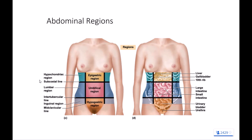Moving directly above the umbilical region, the region above that is called epigastric. Epi is a root word that means above — gastric is a technical term for stomach — so epigastric is the top of the stomach region, located above the umbilical. Beneath the umbilical region, we have the hypogastric region. Hypo means beneath or below, gastric means stomach, so the bottom of your stomach is the hypogastric region.